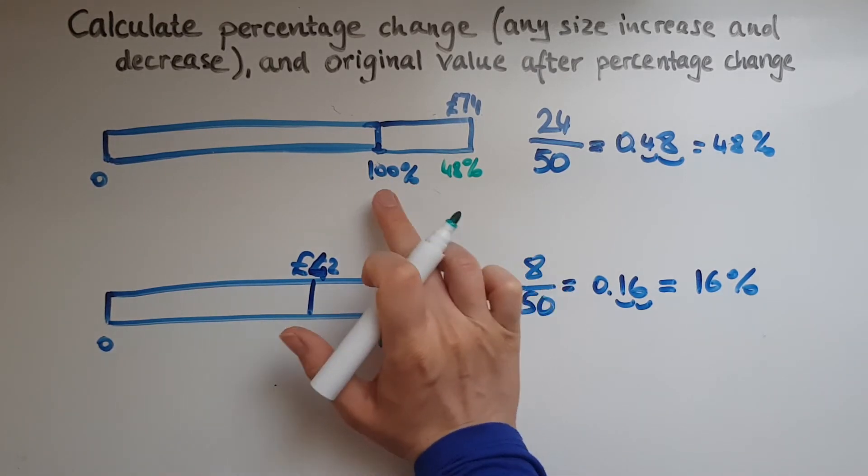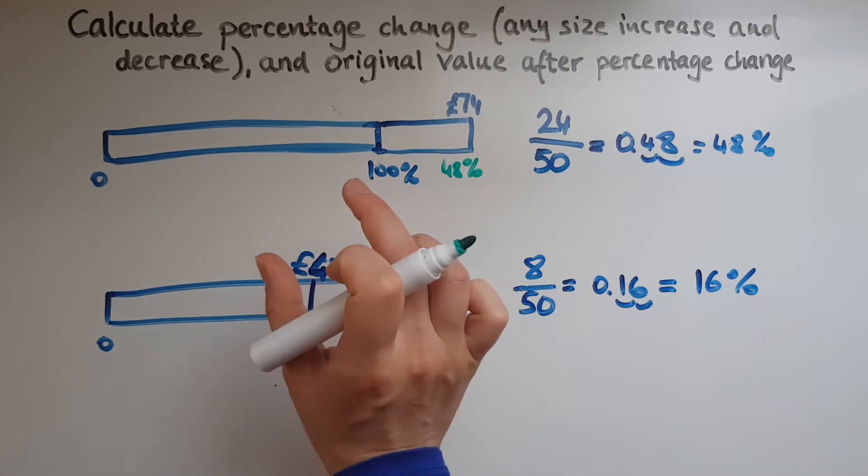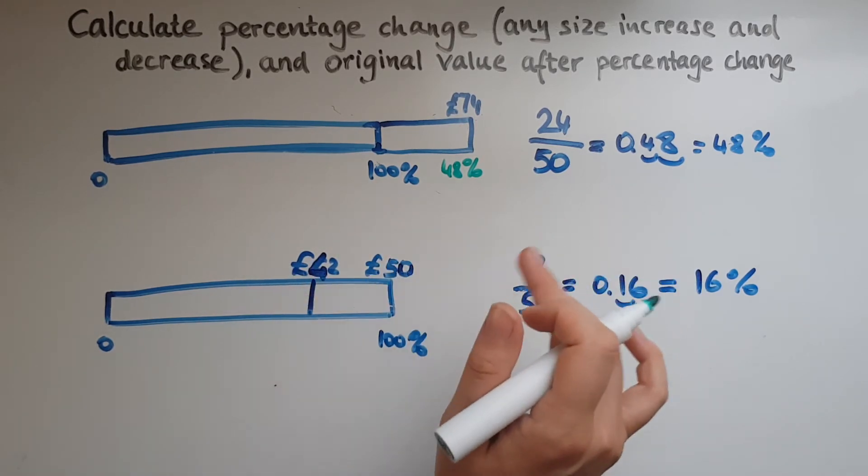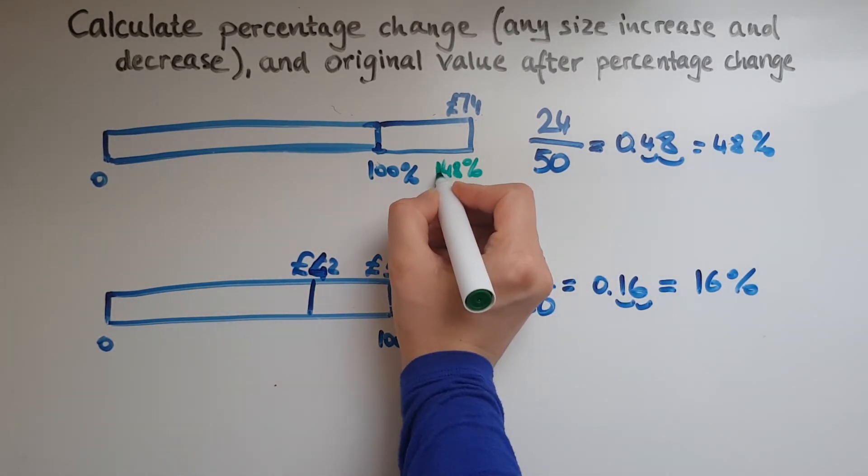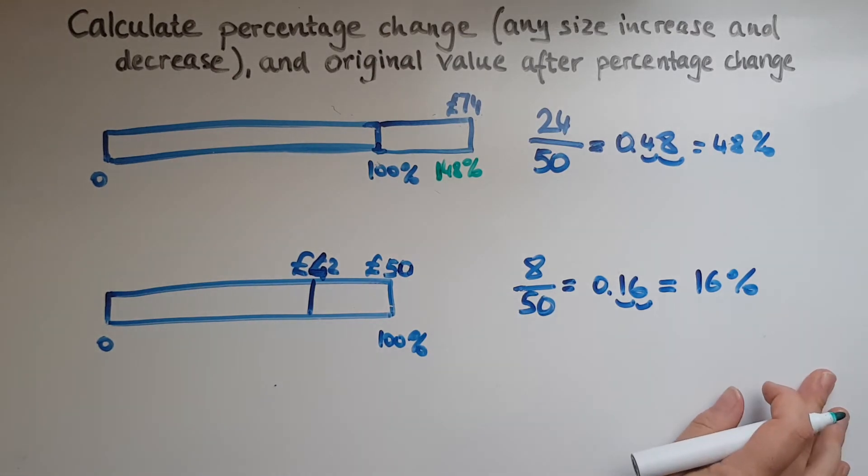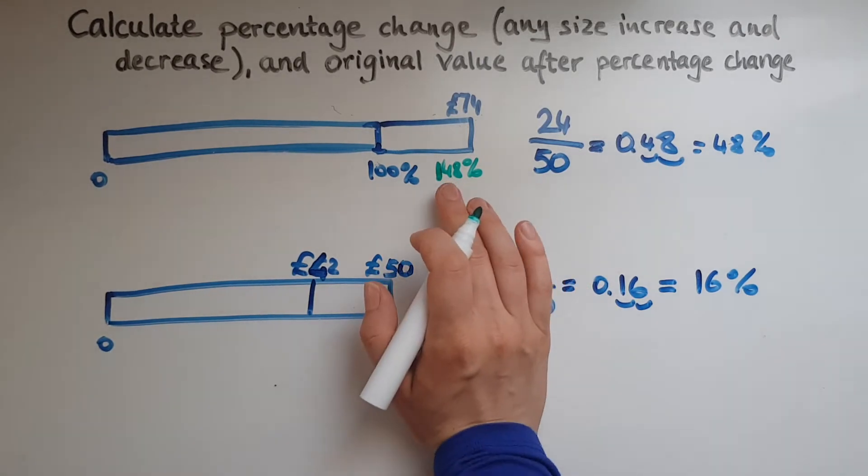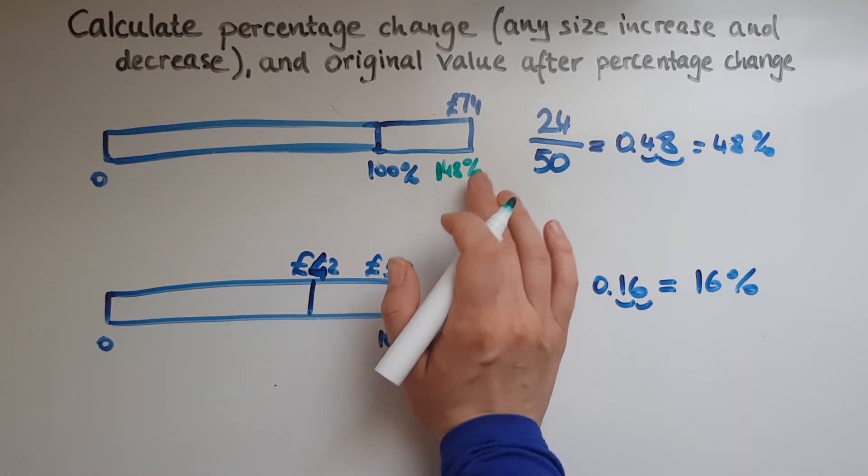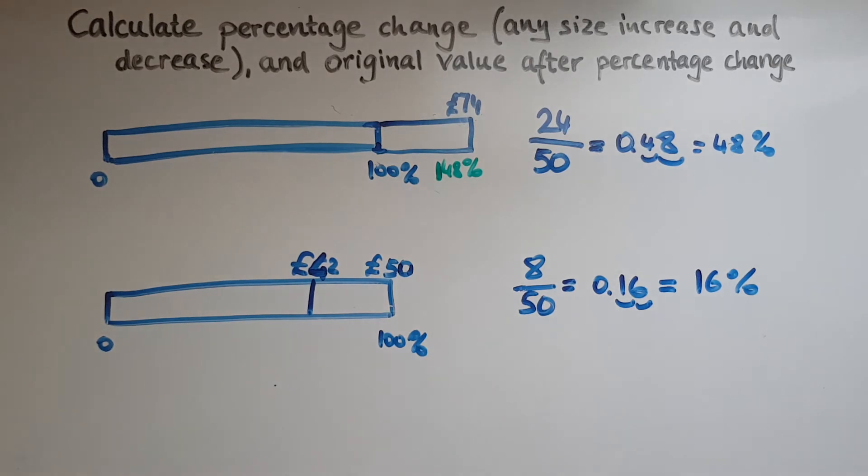So we'll need to find what was that original value or the 100% value before the increase. So if we add 48% to the 100% that we had already, that is going to become in total 148% because there is an increase. And that 148% is equal to 74 pounds.